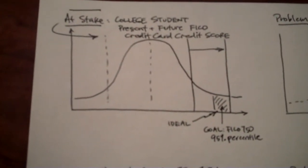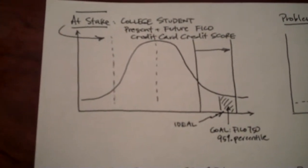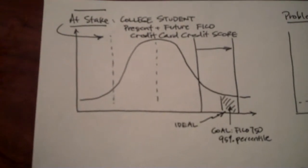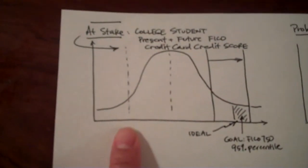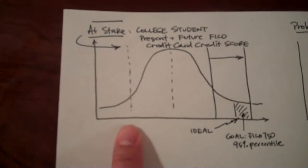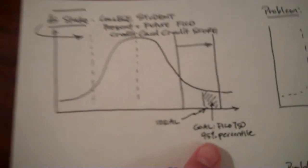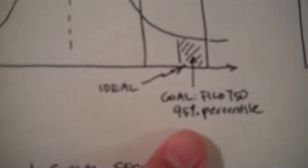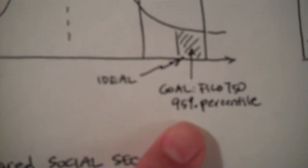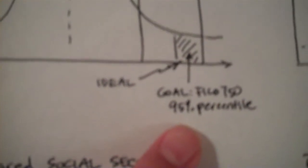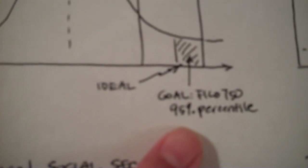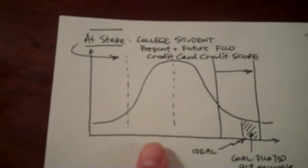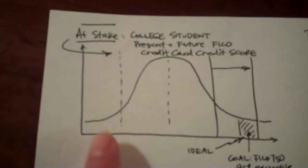This is what is at stake for all college students. There's a present and future FICO score that is at stake. Now, here, I am moving you, the college student, along the bell curve in this direction, where ideally, you want to get to the highest FICO score, well, the highest area, which is at the 95th percentile, where your college student's FICO score is actually going to eclipse and be greater than most traditional adults. And I will move you along this bell curve of your FICO score.